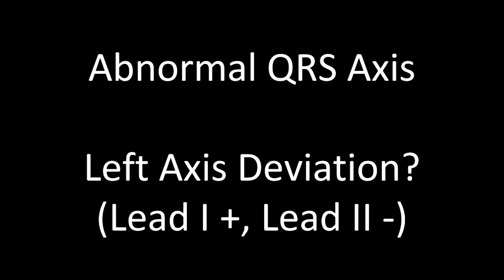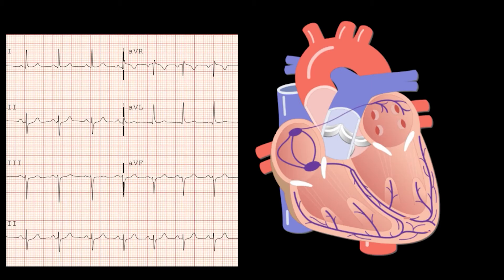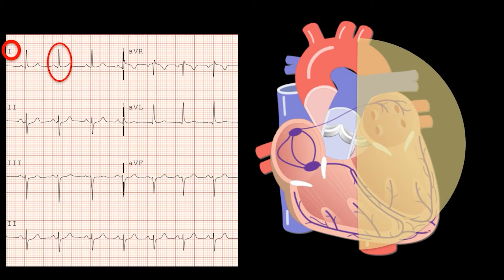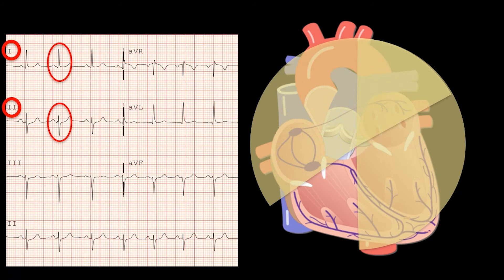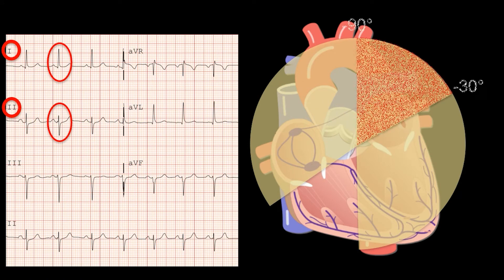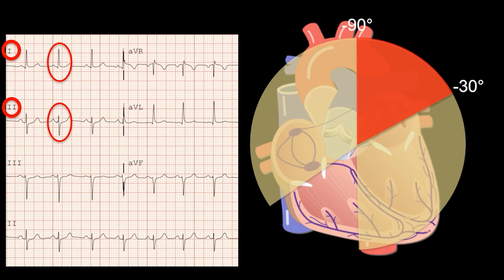So let's talk about if the axis is abnormal. One of the common abnormalities is left axis deviation. When you have left axis deviation, you'll find that lead 1 remains positive and the electrical vector is still moving towards the left side of the body. However, lead 2 is now negative, and if you combine the two, you'll find that the electrical vector is now moving in the direction of minus 30 to plus 90 degrees — so it's shifted to the left compared to normal.